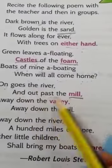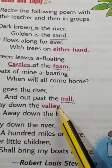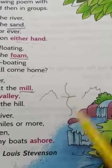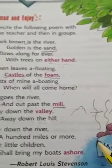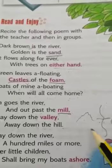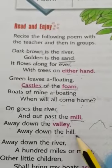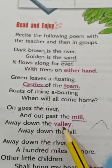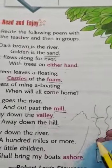So the river passes the mill. 'Away down the valley' — what is a valley? A low area between two hills. Imagine one hill here, one hill here, and the river flows through the middle. The river crosses the valley — passes between both hills — and goes far away down the hill. So here the journey of the river is described: it keeps flowing, passes the mill, goes through the valley between two hills, and flows down into the plain.